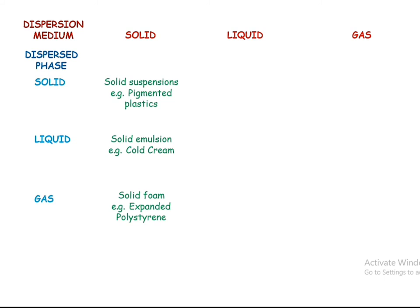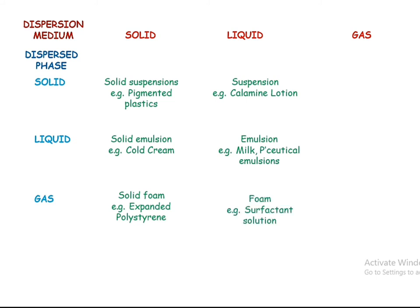When the dispersion medium is liquid and the dispersed phase is solid, suspensions are formed — for example, calamine lotion. If the dispersed phase is liquid in a liquid medium, emulsions are formed — for example, milk and pharmaceutical emulsions. When the dispersed phase is gas dispersed in a liquid, the formulation is a foam — for example, surfactant solutions, which produce a high amount of foam.